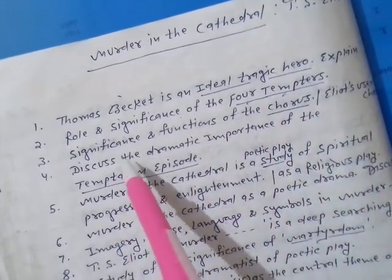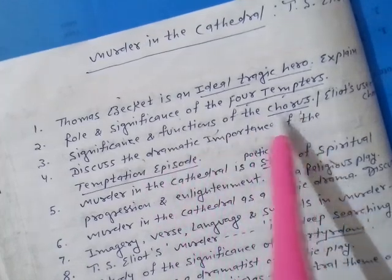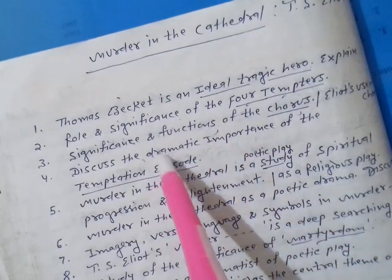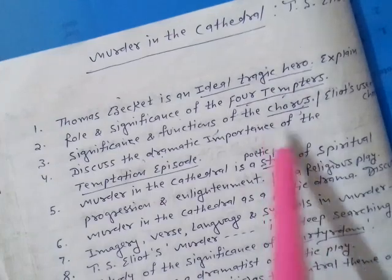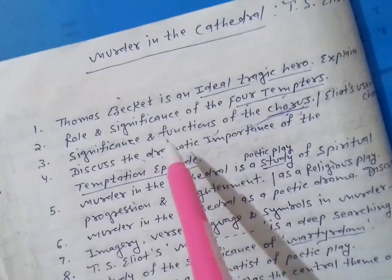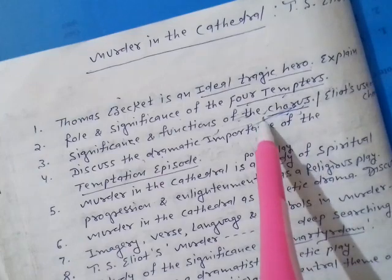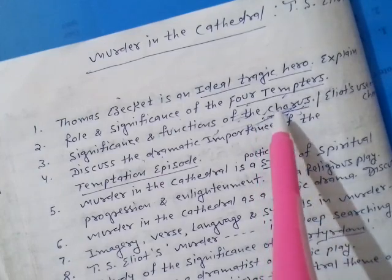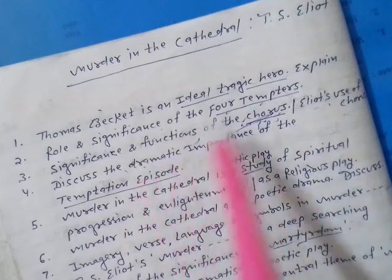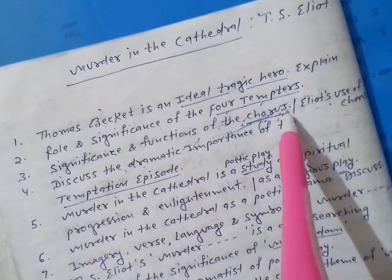The third one is the significance and functions of the chorus. The role of chorus is also very important in this play. You can be asked: what is the significance and functions of the chorus, or Eliot's use of chorus in his poetic play Murder in the Cathedral, or what is the role and significance of chorus.